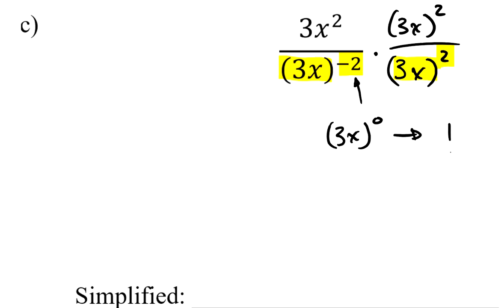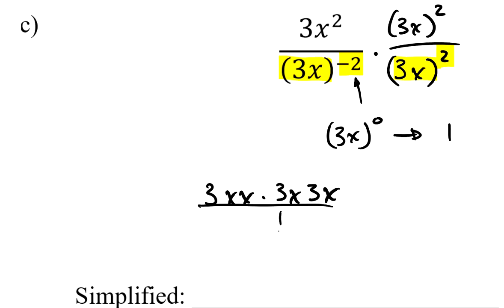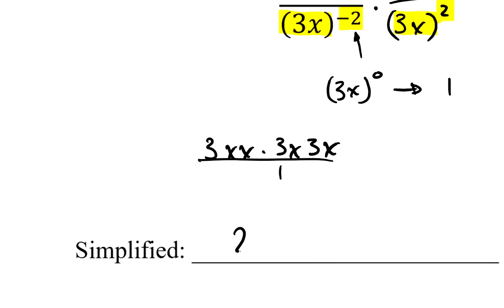Turning to what's remaining in the numerator: I've got 3x squared, but also 3x times 3x. They're not the same — one is 3 and then x times x, i.e., 3x squared; the other is 3x times 3x. In the numerator I have exactly 3 factors of 3: 3 times 3 times 3 goes from 3 to 9 to 27. So my answer has the number 27. And I have 4 factors of x: x times x is x squared, then x to the 3rd, then x to the 4th. So the answer is 27x to the 4th power.